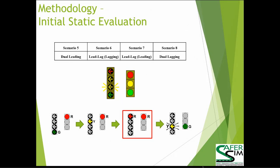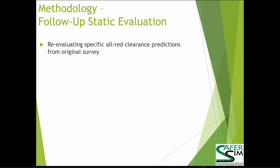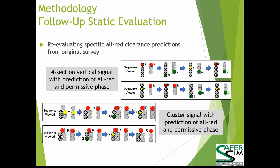Following this initial static evaluation, once we obtained all the results, we found some unique data and wanted to further investigate by honing in on four concrete scenarios: two for the four-section vertical signal and two for the five-section cluster signal. Specifically, we're looking at the direct transition from the all-red clearance interval to the permissive indication, and the prediction of the all-red clearance itself. This follow-up static evaluation received about 100 additional responses from people across the United States.